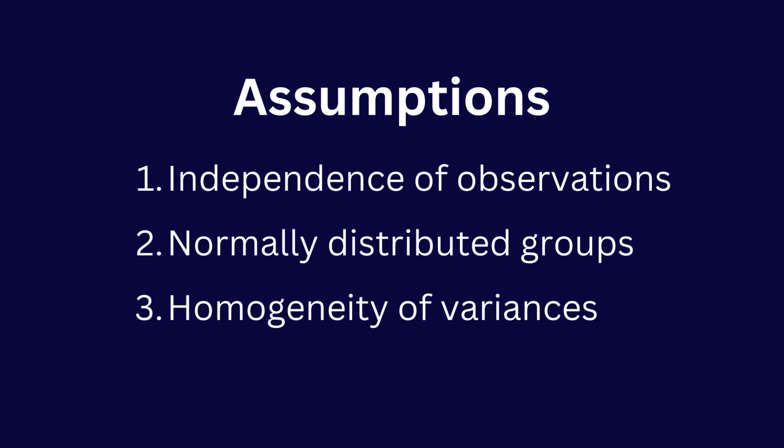The second assumption is normally distributed groups — that means your data should be normally distributed. The third assumption is homogeneity of variance, meaning the variance of the groups should be equal.